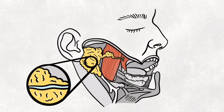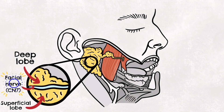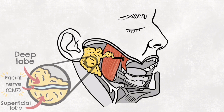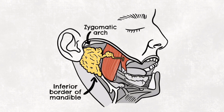The parotid gland can be divided into deep and superficial lobes, separated by the facial nerve. It lies within a space known as the parotid region. For better understanding of its location, let's have a look at this diagram. It's bounded superiorly by the zygomatic arch, inferiorly by the inferior border of the mandible, anteriorly by the masseter muscle, and posteriorly by the external ear and the sternocleidomastoid.